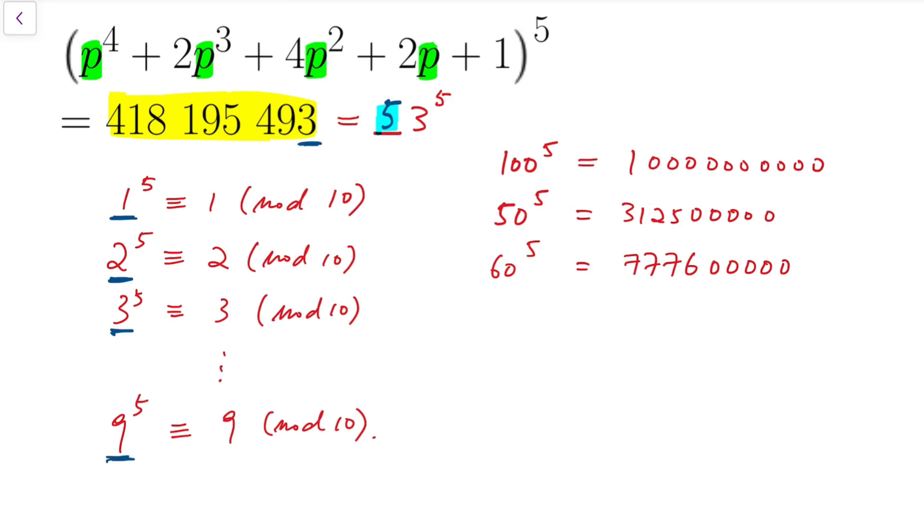We know that this number, in yellow, is equal to 53 to the power of 5. So that means we're supposed to solve p to the power of 4 plus 2p cubed plus 4p squared plus 2p minus 52 equals 0.